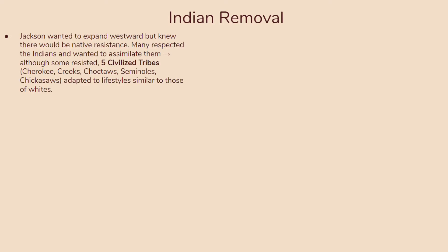Jackson wanted to expand westward but knew there would be native resistance. A lot of people actually respected the Indians and wanted to assimilate and coexist with them. Some resisted assimilation, but five tribes known as the Five Civilized Tribes agreed to this — the Cherokee, the Creeks, the Choctaws, the Seminoles, and the Chickasaws — and they adapted to lifestyles very similar to those of whites.